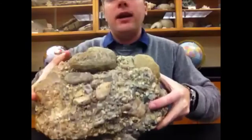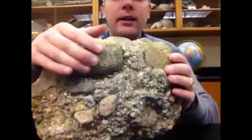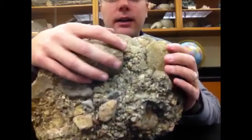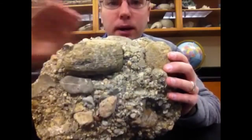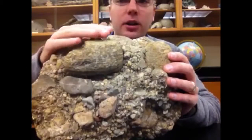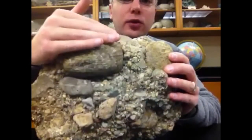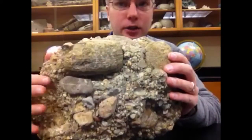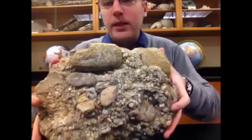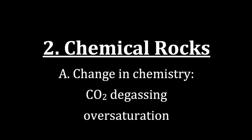As the sediment is moved a greater distance, the grains are grinding and striking against each other, which breaks off the sharp edges and starts to smooth and round that sharpness. So the greater the distance traveled, the more rounded our grains will likely be in our clastic sedimentary rock.